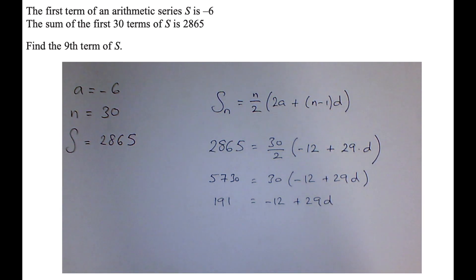It's the common difference. Now if I add 12 to both sides, that's 203 is equal to 29D. And so if I divide both sides by 29, I should get D is equal to 7.